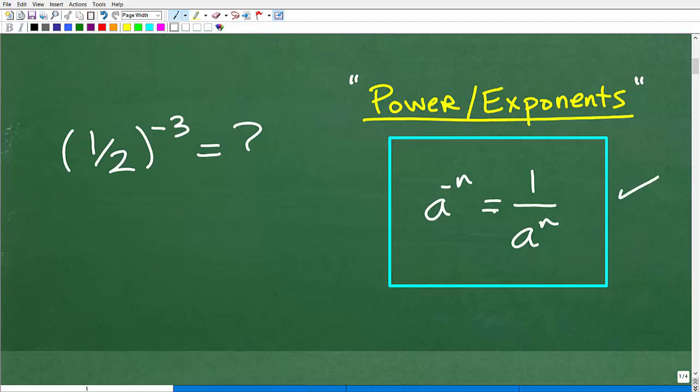And one of the rules you need to understand is this rule right here. a to the negative n is equal to 1 over a to the n. It might have been a different variable, but this is a rule of powers and exponents you need to understand. And this is the rule that you need to unlock the answer to this guy right here.